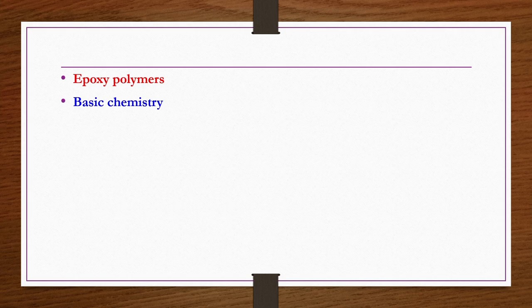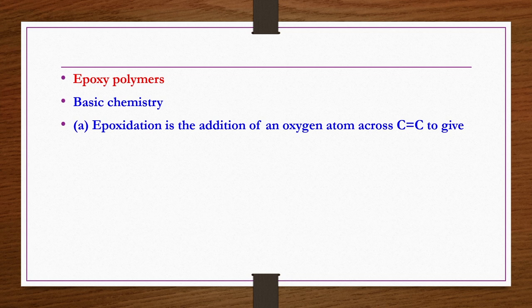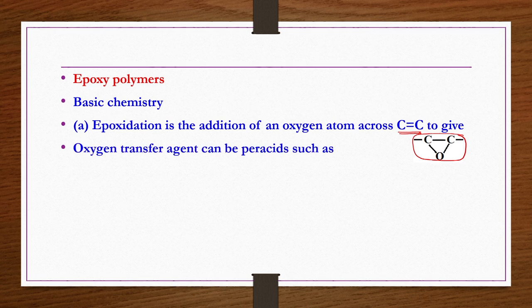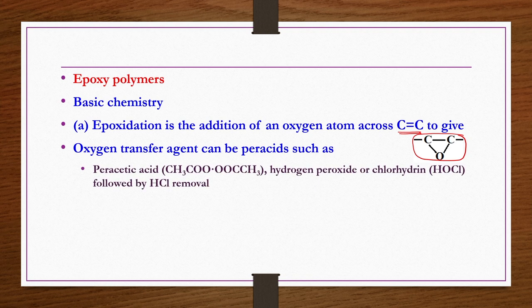Now, the same polycondensation process is applied to produce epoxy resins. Different ways are possible, and more research is ongoing to produce different types of epoxides. We take four important ones that are commercially viable in India. The first is epoxidation—the addition of an oxygen atom across a C=C double bond to give an epoxy functional group. Oxygen transfer agents can be peracids such as peracetic acid, hydrogen peroxide, or chlorohydrin followed by HCl removal, the latter giving epichlorhydrin.